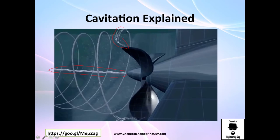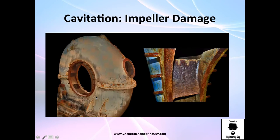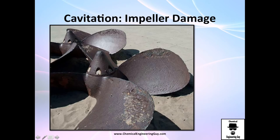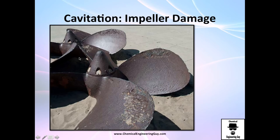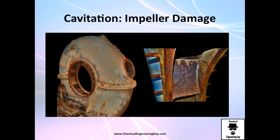Cavitation not only damages the impeller — it can also cause significant damage to the housing of the centrifugal pump. Here you can see the inlet, the outlet, and where the impeller sits. Even after removing the impeller, you can clearly see the cavitation damage on the inner wall of the pump housing. The moral of the story: avoid cavitation. We will see how to calculate and prevent it.